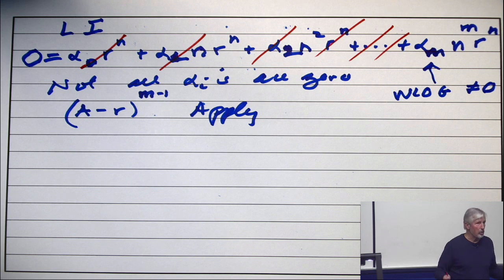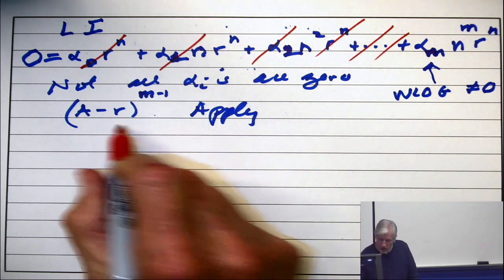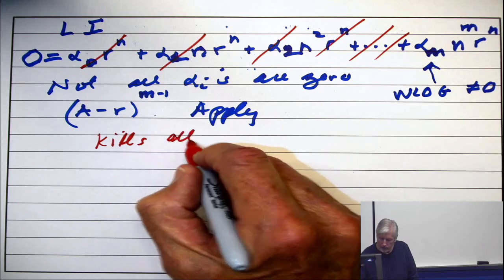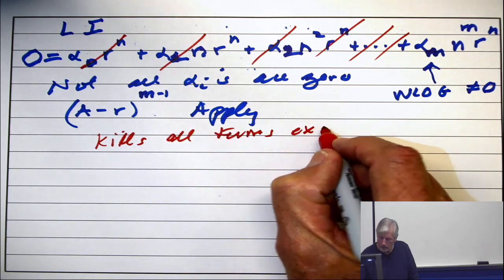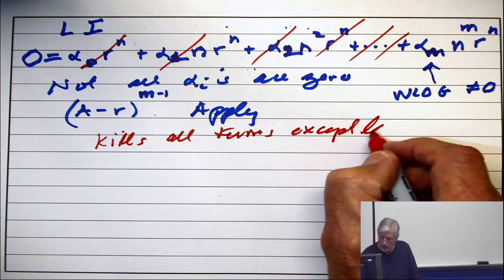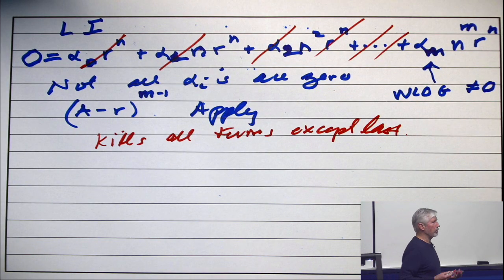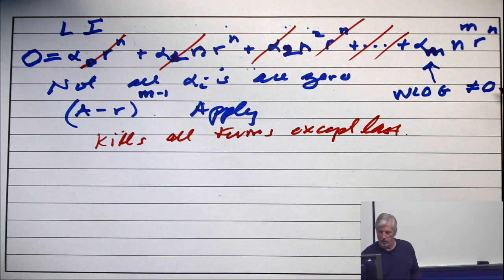Unless the constant is 0. Okay, so you apply this, and it kills all terms except the last. And then the last one would have to be 0. It would require a 0 coordinate, but you've already assumed that it's not 0.